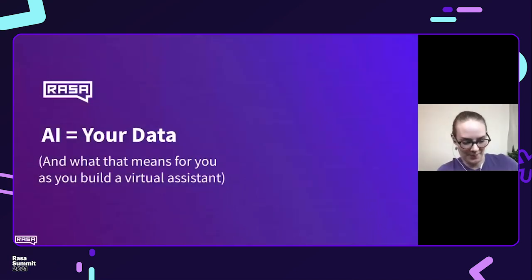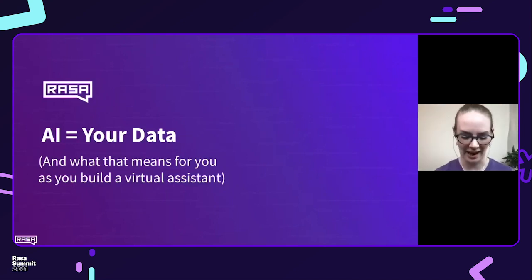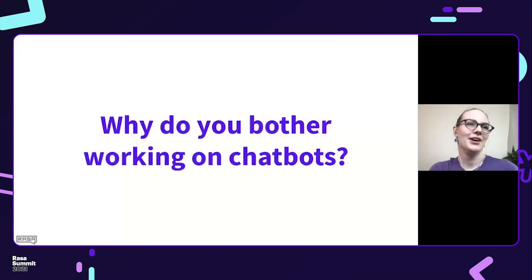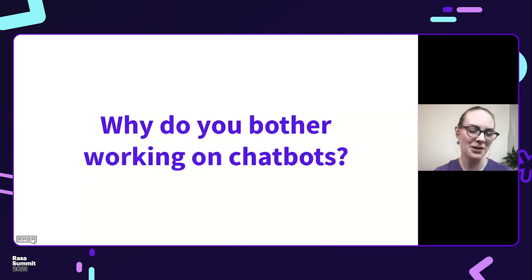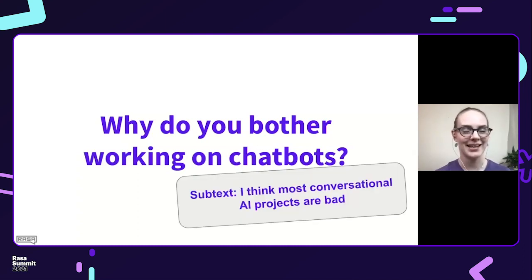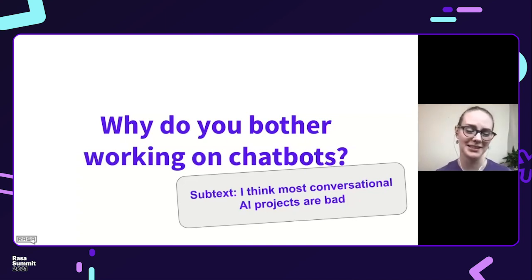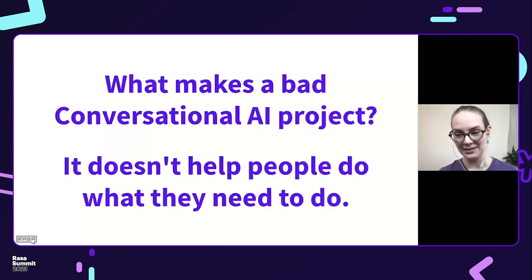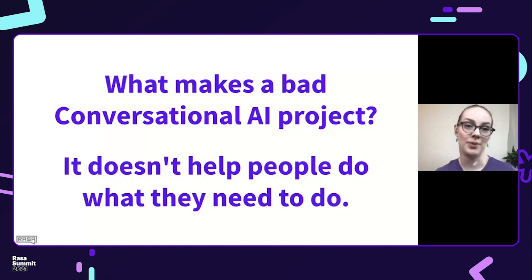Today I'm going to talk about how AI is actually data and what that means when you start to build a virtual assistant — with the caveat that this is focused on the Rasa way of building virtual assistants. A question I get a lot when I tell people what I do is some variation of 'why do you bother working on chatbots?' The subtext is generally that they don't like conversational AI projects — they've had some bad experiences. That has led me to think a lot about what makes them not work. Fundamentally, a conversational AI project isn't helpful when it doesn't help people do what they need to do, and ideally do it faster than they could any other way.